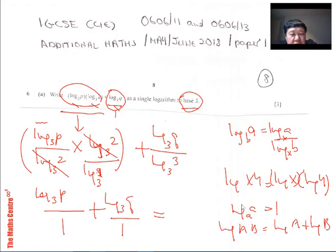So log P to base 3 plus log Q to base 3 is just log PQ, all to base 3.